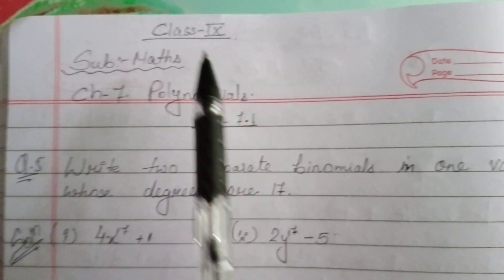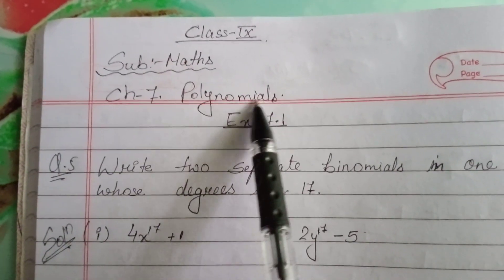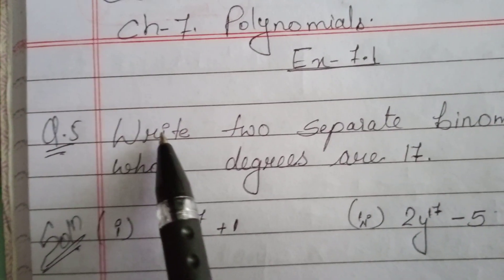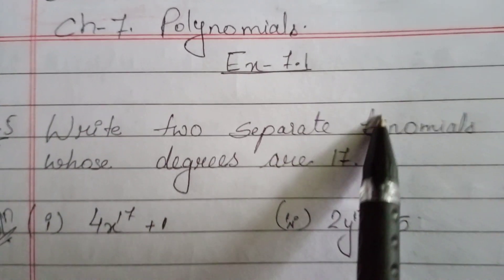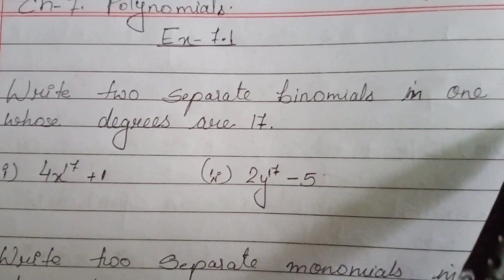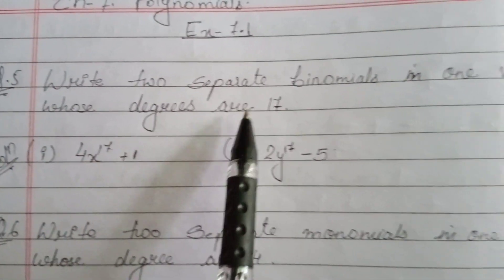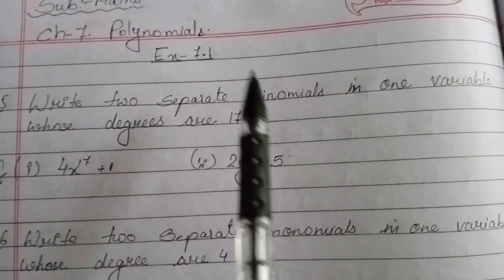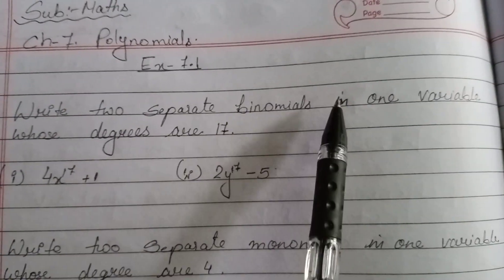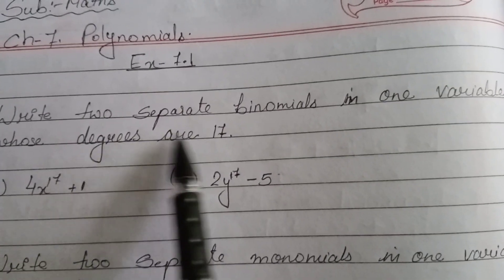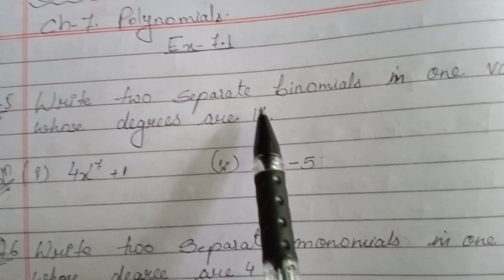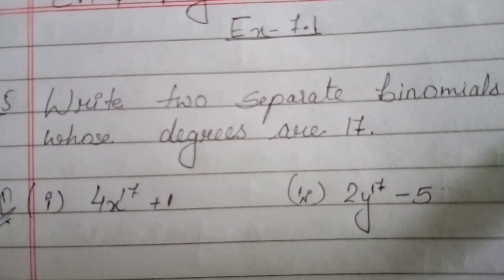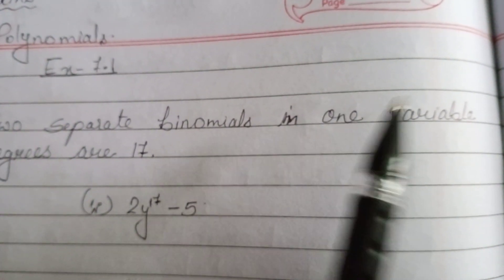Good afternoon class 9. We are in chapter 7, polynomials, exercise 7.1. The question is: write two separate binomials in one variable whose degrees are 17. A binomial is a polynomial where the number of terms is 2. Degrees are 17 means the highest power must be 17, and one variable means only x or y should be used, not both.